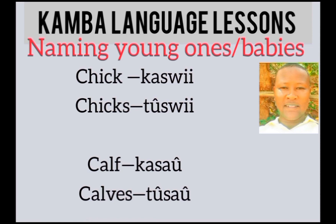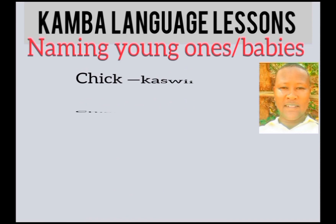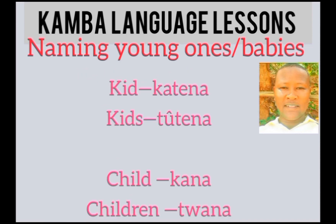Chick is ka swi, chicks is to swi. Calf is ka saw, calves is to saw. Next we have kid — katena. Kids is to tena. The kid is the young one of a goat.